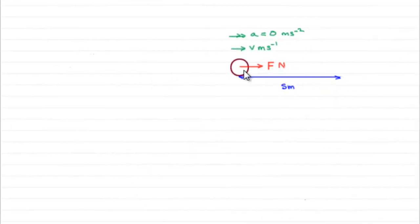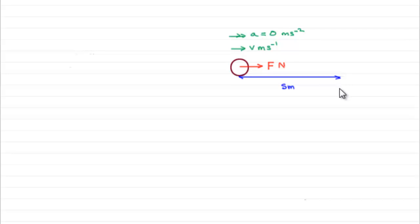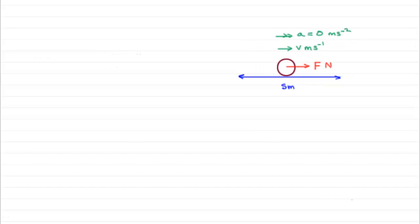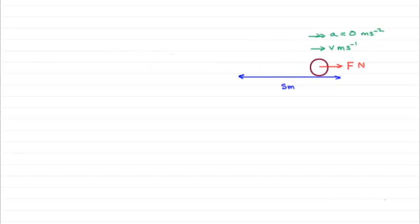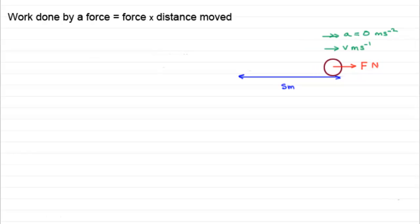Suppose I had a particle being acted upon by a force of F newtons, and this particle was able to move at a constant speed — no acceleration — over a distance s. We've seen that the work done by F in moving that particle a distance s is given by force times distance moved: W = F × s.